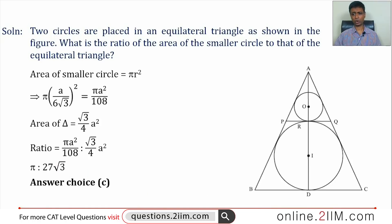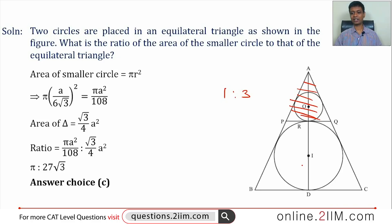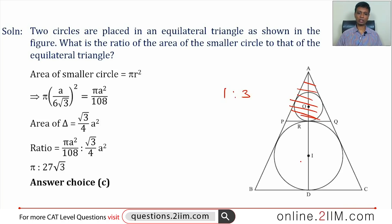The answer is choice C. The key insight is recognizing that the smaller triangle is similar to the larger triangle with a ratio of 1:3. Once you see that, you know the inradius of the smaller triangle is one-third of the larger one. Then it's just πr² versus (√3/4)a². But to even approach this question you need to know (√3/4)a², (√3/2)a, and a/(2√3). Totally stay on top of equilateral triangles — you need to know everything about them and how to derive them.